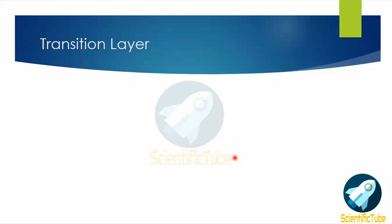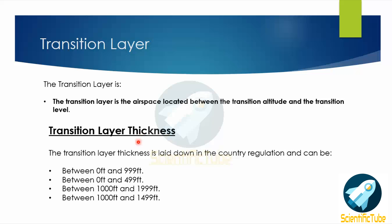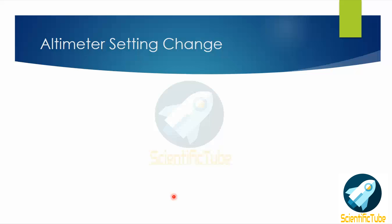Now let's discuss the transition layer. The transition layer is the airspace located between the transition altitude and the transition level. Its thickness varies from country to country and is laid down per country regulation. It can vary between 0 and 999 feet, between 0 and 499 feet, or between 1,000 and 1,499 feet.